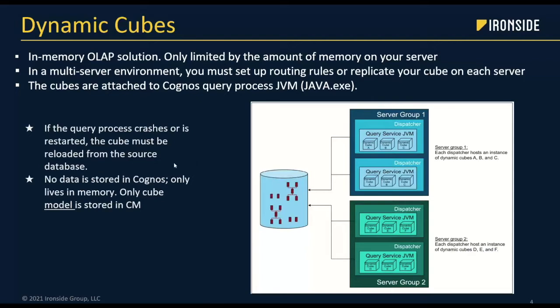The caveat is that if the Java process crashes — for example, because a user creates a complex report — then your cube is going to shut down. Unfortunately, there's nothing saved anywhere. When that process restarts, the cube has to reload again from your source system back into RAM. If it takes a while to load, it's going to take that same amount of time to reload. No data is stored in Cognos — it's only in memory at that point in time.